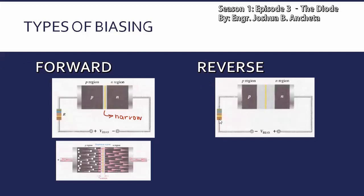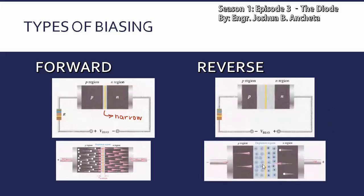Para naman sa reverse bias — ang V bias natin, negative terminal connected sa P region, and then yung positive terminal connected sa N region. So with this biasing condition, ito yung biasing condition na do not allow the flow of current. Kung makikita ninyo dito sa illustration, walang flow of electrons — although may mga minimal electron flow, napaka-kaunti lang yan — almost zero yung value ng electron flow na nakikita natin dito, below the reverse bias circuit or reverse bias condition.